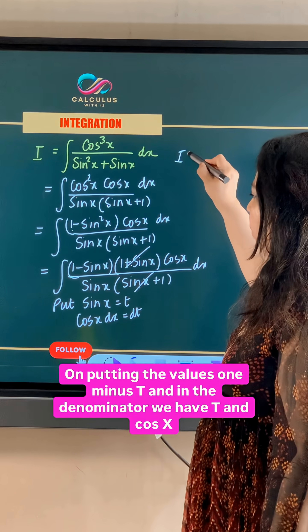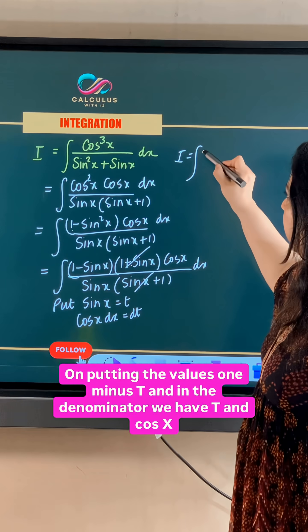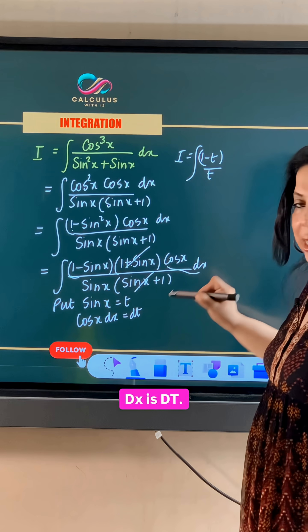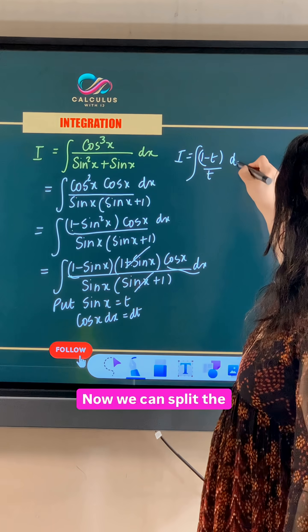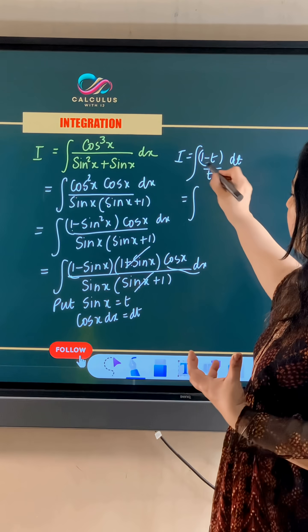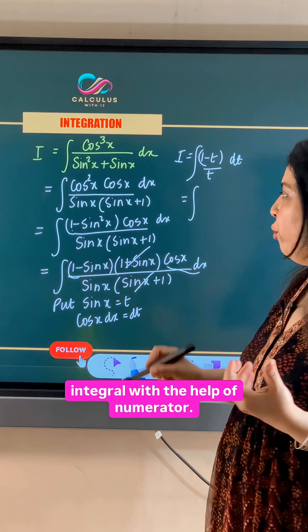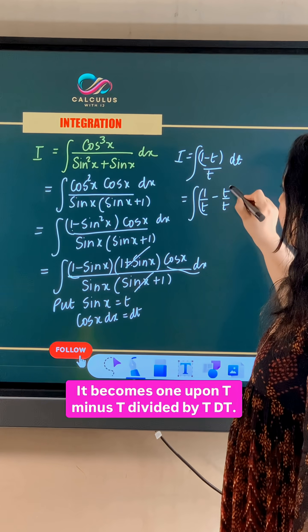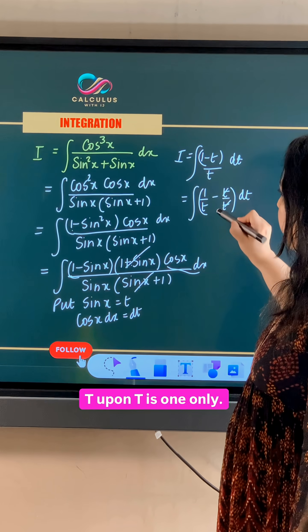On putting the values, 1 minus t, and in the denominator we have t, and cos x dx is dt. Now we can split the integral with the help of numerator. It becomes 1 upon t minus t divided by t dt. t upon t is 1 only.